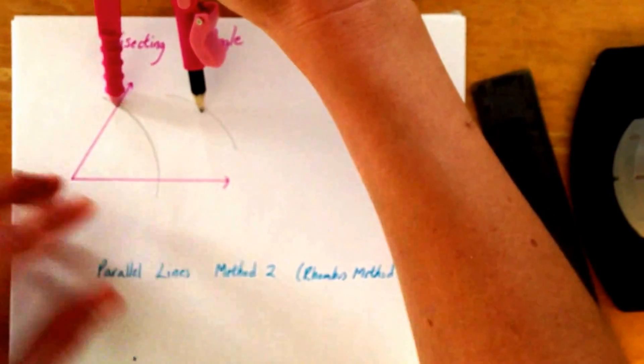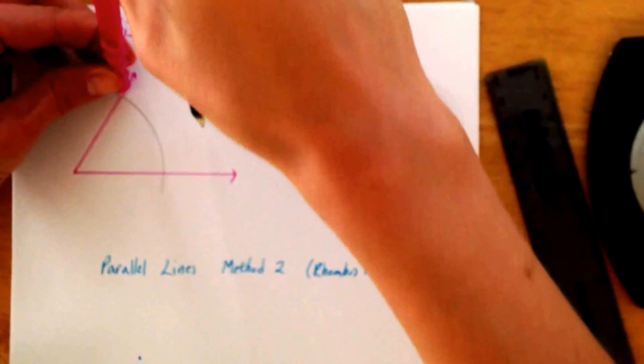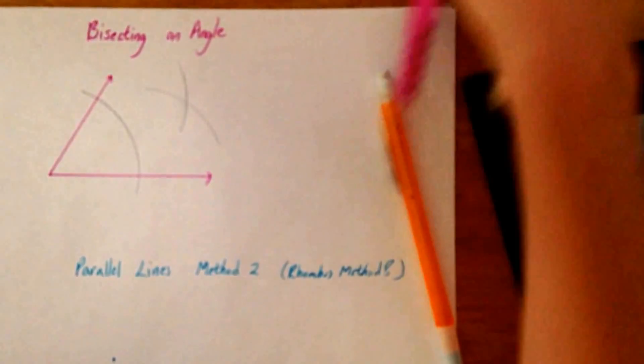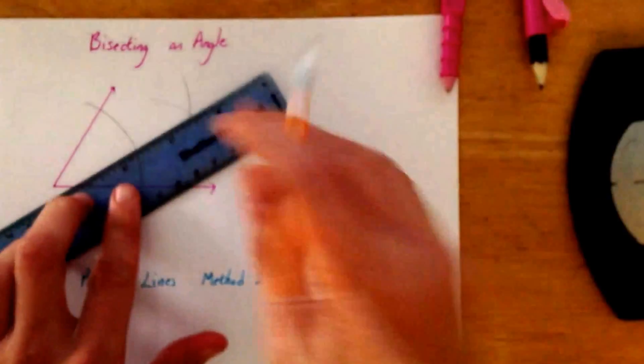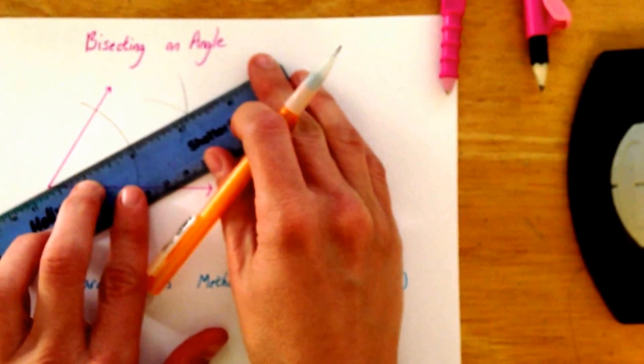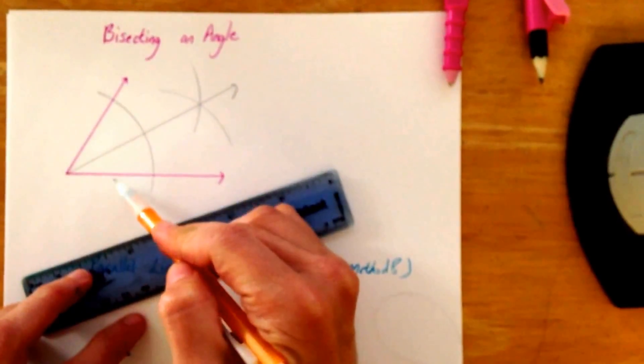and keeping the same length at the other endpoint, draw another arc, kaboom! We are done after we connect those points. We have successfully bisected our angle.